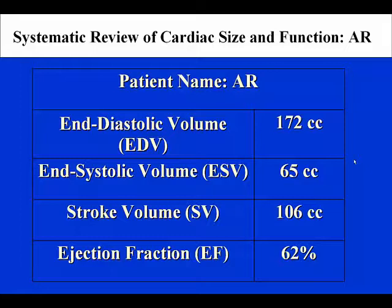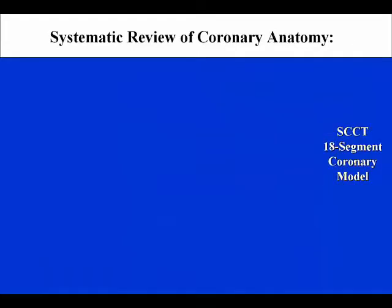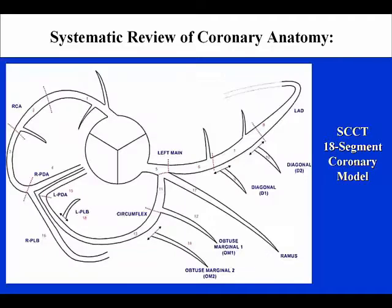For analysis of the coronary arteries, the current recommendations are to use the Society of Cardiovascular CT 18-segment coronary model, which is demonstrated here, representing the left main, proximal mid- and distal left anterior descending with first and second diagonals, evaluation of the left circumflex including the possibility of a ramus intermedius, as well as the possibility of left-sided predominance including a left posterior lateral branch and a left posterior descending branch. Also, the right coronary artery is divided into proximal mid- and distal segments, including a right-sided posterior descending and a possible right-sided posterior lateral branch.